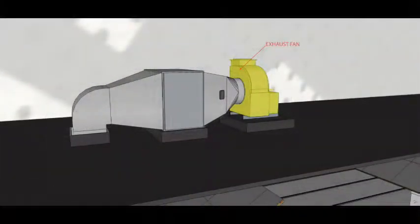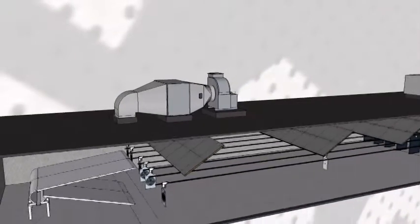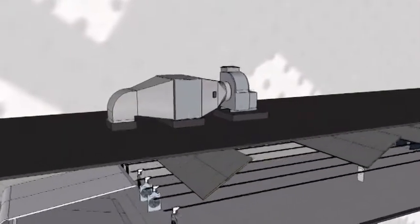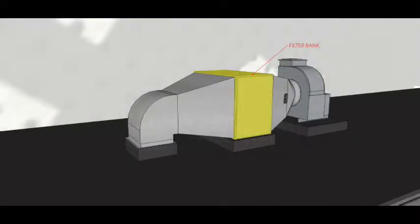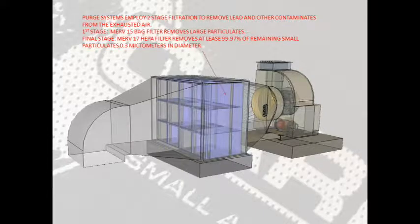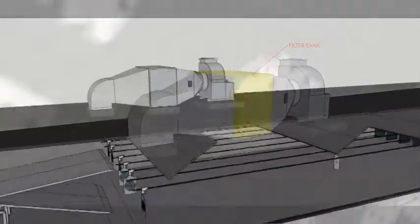The exhaust fan. The filter bank. Purge systems employ a two-stage filtration to remove lead and other contaminants from the exhausted air. The first stage, a MERV-15 bag filter removes large particulates. The final stage, a MERV-17 HEPA filter removes virtually all remaining particulates.